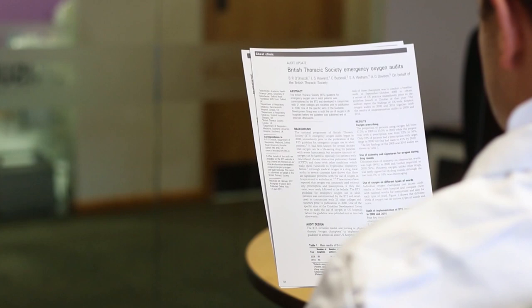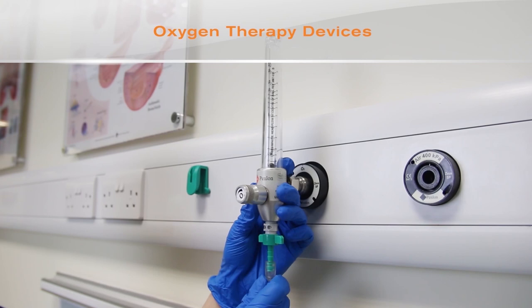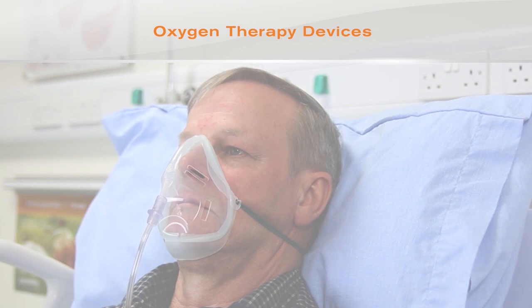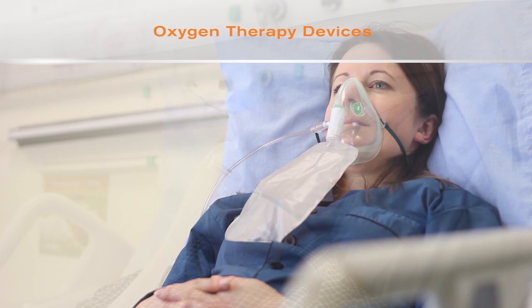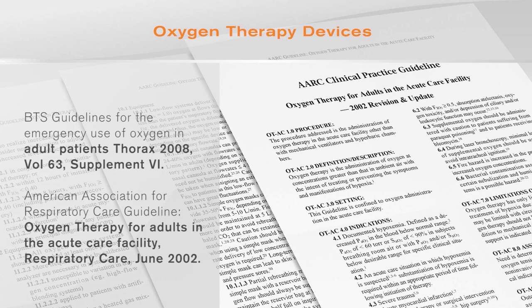Recent papers have shown that amongst practicing trainee doctors and nurses there is a lack of knowledge about oxygen therapy devices and their correct use. There are also many false beliefs, with the result that many patients on general wards are incorrectly treated. This video covers the main types of device commonly used for delivering oxygen therapy, which enable clinicians to comply with guidelines published worldwide, such as the British Thoracic Society guidelines and the American Association for Respiratory Care guideline.